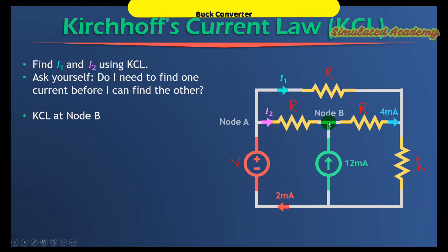Note that at node B I am dealing with three currents. One current is I2 entering node B, one is 12 mA entering node B, and 4 mA is leaving node B. I will sum all these currents according to KCL and equate to zero.